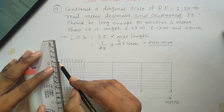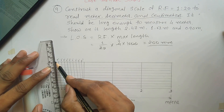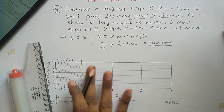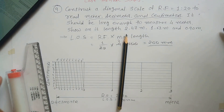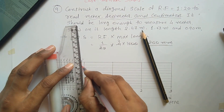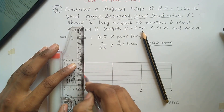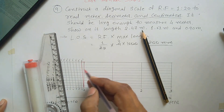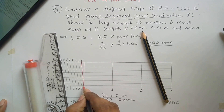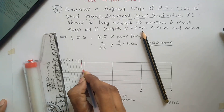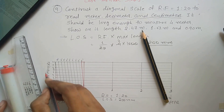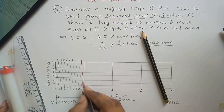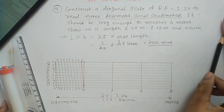Here we have constructed the diagonals for one division. Taking only the first division and showing in different colors: this is 0, 1 centimeter, 2 centimeter, 3, 4, 5, 6, 7, 8, 9, and 10 — where 10 centimeters equals 1 decimeter. This is how the diagonal works, incorporating centimeters as the third unit of measurement.